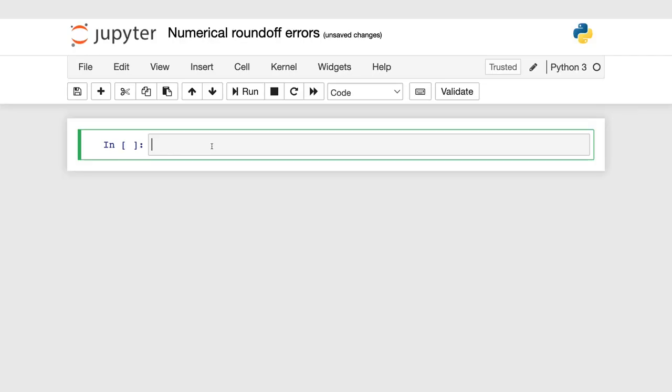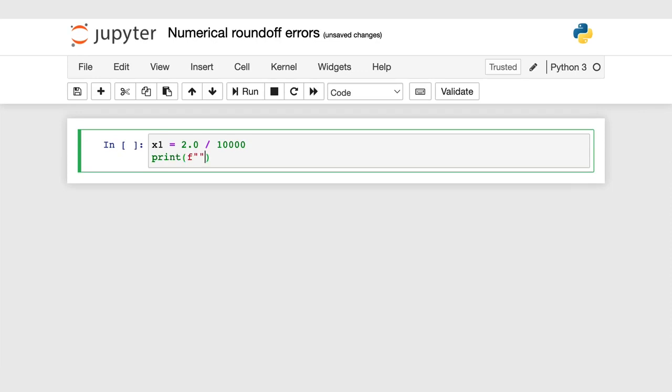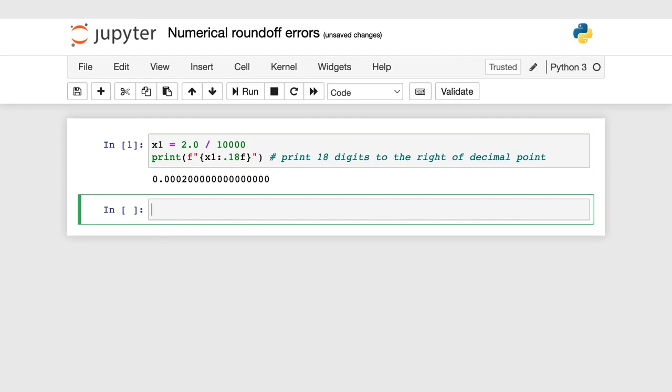Let me illustrate this in this notebook. First, let's set x equals 2 over 10,000 and print the result to a lot of decimal points of accuracy. Okay, that looks pretty good.